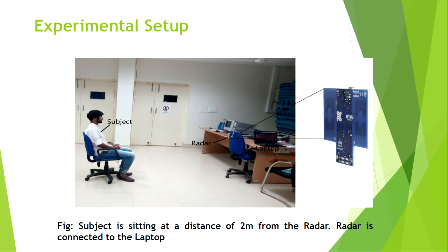This is the experimental setup. The subject is positioned where the radar is placed. The radar is very small and contains both transmitting and receiving antennas. The subject sits at a distance of 2 meters.